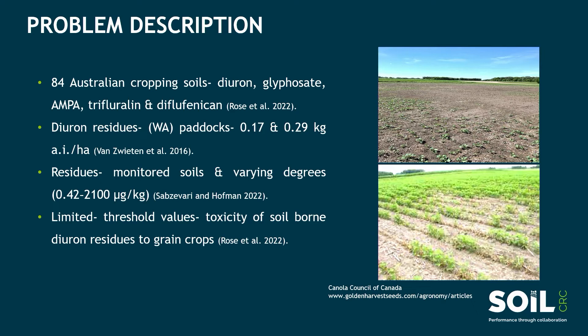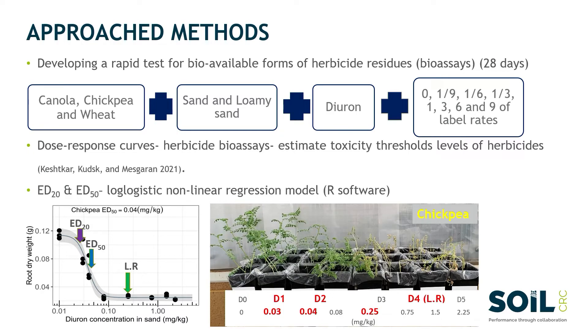However, there are very few publicly available threshold values for assessing phytotoxicity threshold values for soil-borne diuron herbicide residue on grain crops. Therefore, to assess the bio-available herbicide residue in the soil and their toxicity threshold levels that can cause crop damage, a 28-day herbicide bioassay was carried out in the glasshouse.